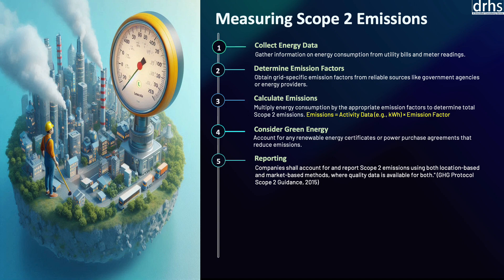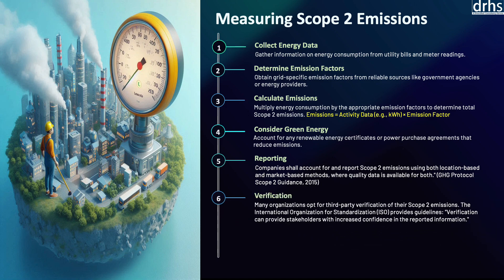The sixth step is verification. Verification ensures the accuracy and reliability of scope 2 emission data. Third-party verification involves independent auditors reviewing the data collection methods, emission factors, and calculations to confirm their validity. Verification is often required by regulatory bodies or investors and enhances the credibility of an organization's emissions reporting. According to the World Resource Institute, verified data provides stakeholders with confidence that reported emissions are accurate and that the organization is committed to robust environmental management.